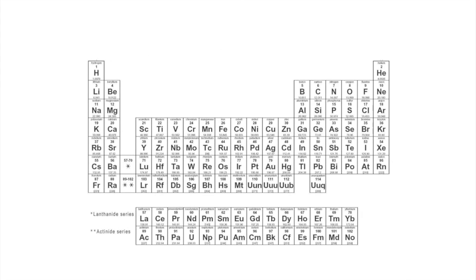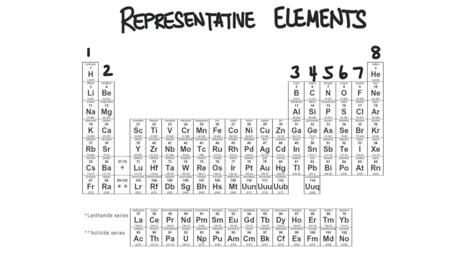Atoms want to have a full valence shell — meaning the outermost energy level. There's a quick method to determine the number of valence electrons in an atom. For the representative elements — the numbered groups on the periodic table — the number of valence electrons will be the same as the group number. Everything in group one has one valence electron. Group two has two. Over here is group three with three valence electrons, and so on. The last column is group eight, and they have eight valence electrons, except for helium, which only has two. They all have a full valence shell.